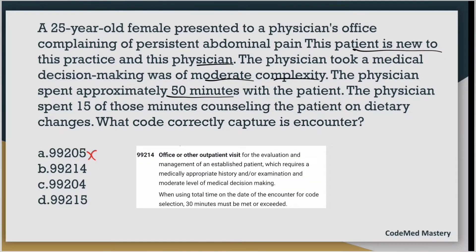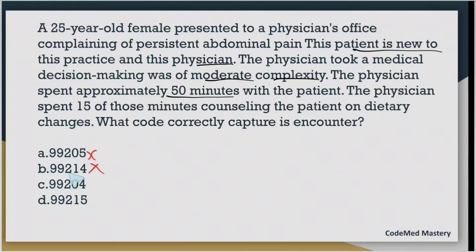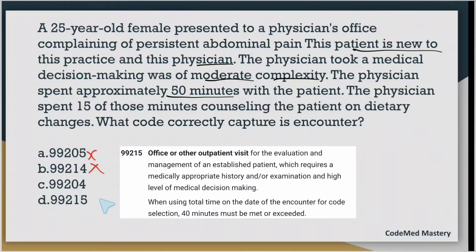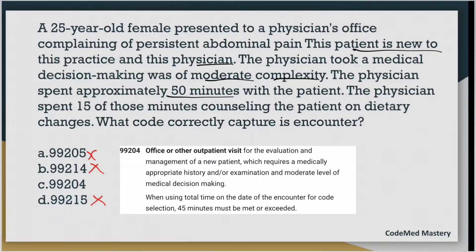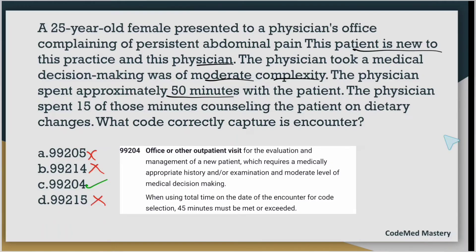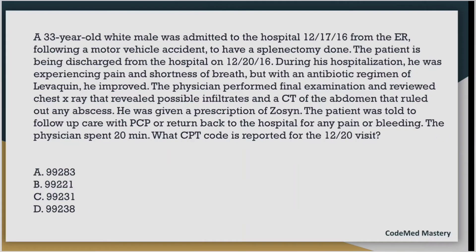Option B, 99214, is for an office or outpatient visit for an established patient — but our patient is new, so we eliminate it directly. 99215 is also for an established patient with high-level MDM, so we eliminate that too. We are left with option C: 99204, which is for office or outpatient visit for E&M of a new patient requiring moderate-level MDM, with 45 minutes must be met or exceeded. The question shows new patient, moderate MDM, and 50 minutes — matching 99204. That is the right answer.